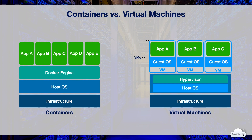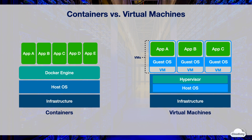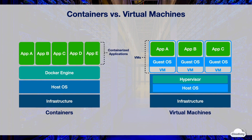Containers are a much lighter and more cost-efficient alternative to VMs. Containerized applications run on top of a container engine, such as the Docker engine, which is a virtualization layer that can run on any operating system. You can run multiple containers on the same machine, sharing the same underlying OS and hardware. Container images are typically tens of megabytes in size, whereas each VM image includes a copy of an operating system and can take up tens of gigabytes.